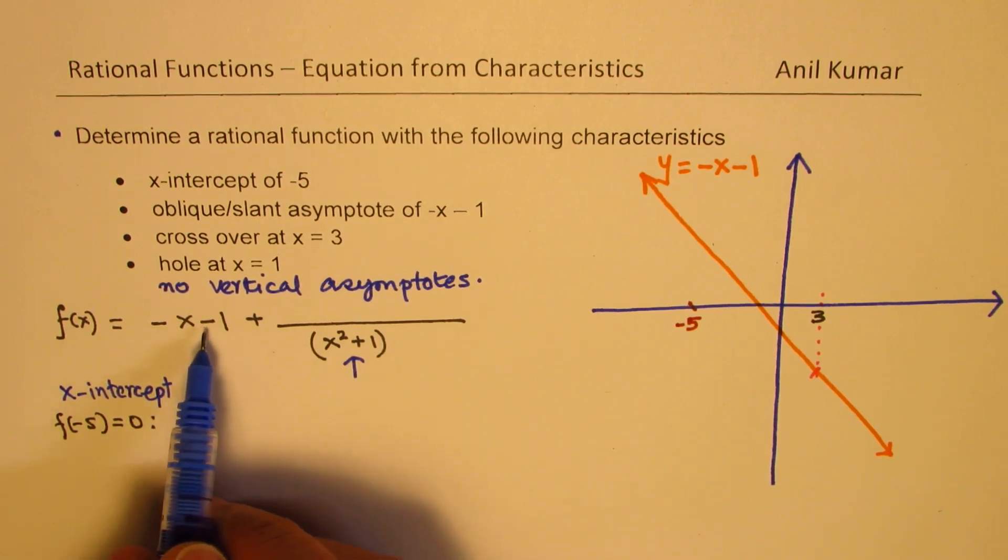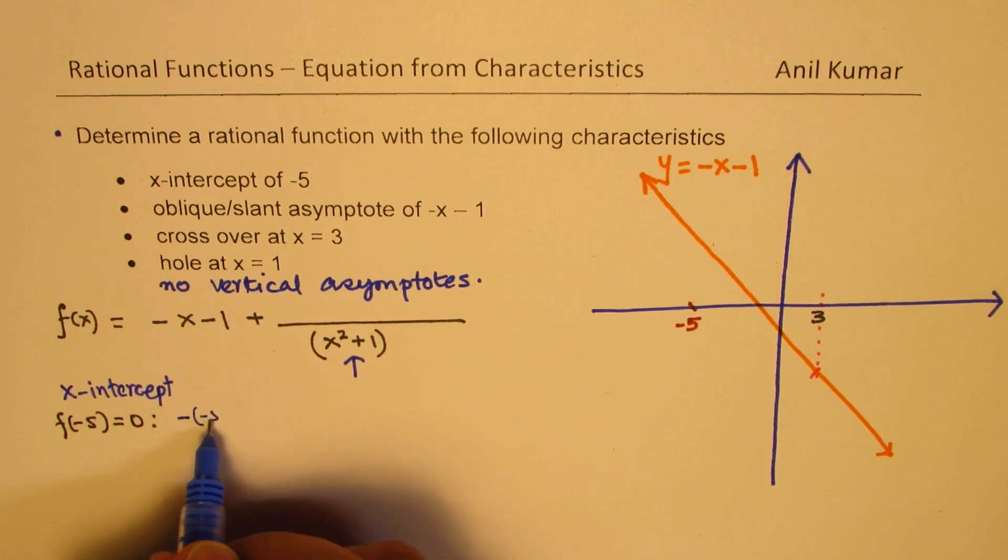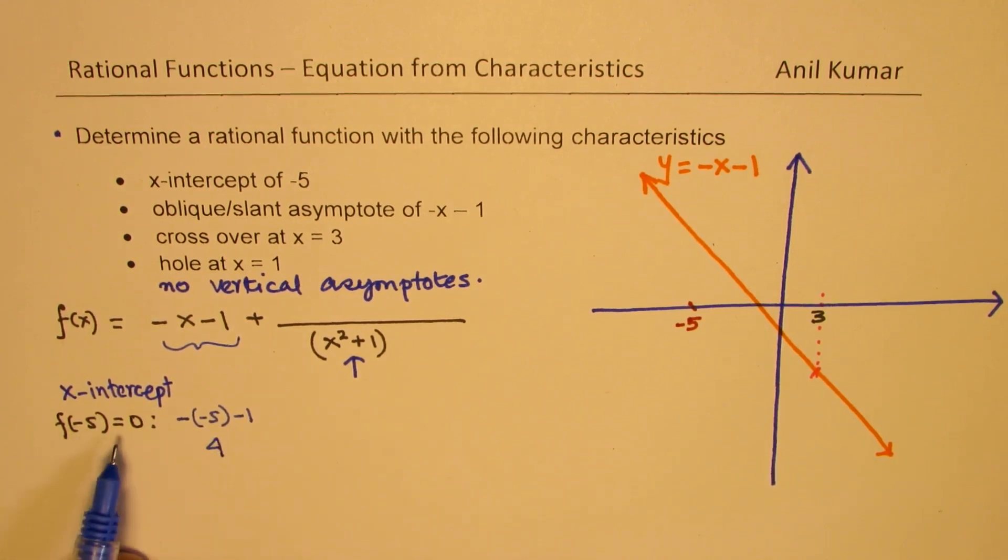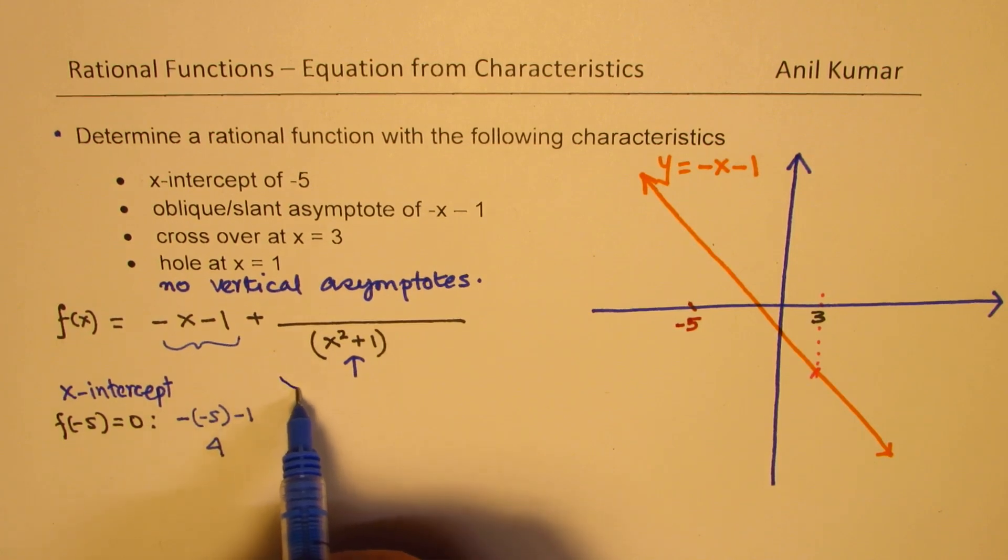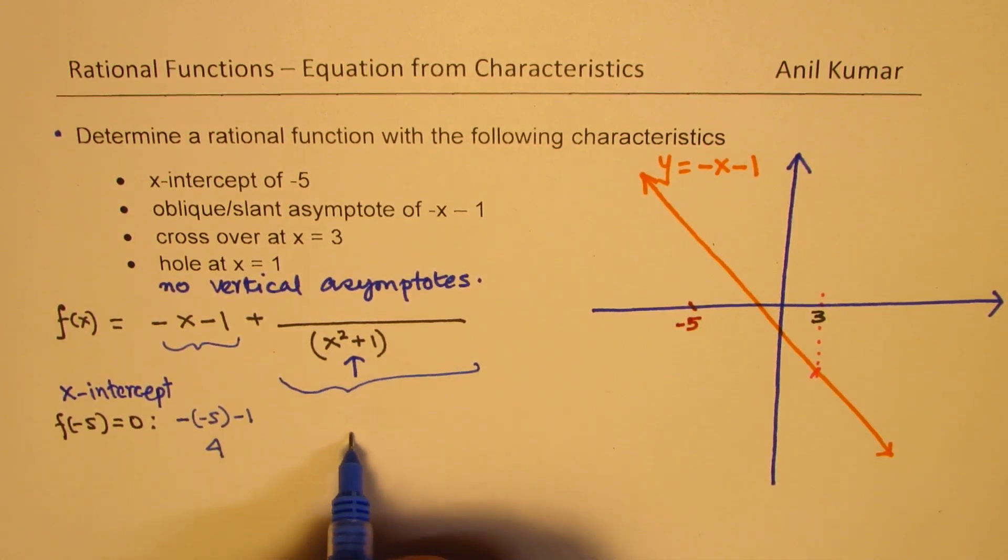Let us say, if I substitute minus 5 here, so we get minus of minus 5, minus 1. And this value gives us 4. We want 0. That means this whole value should be minus 4.